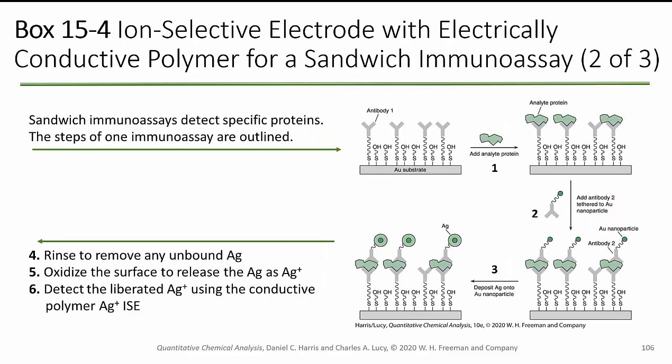There are other neat things you can do, like putting biomolecules into the polymer on your electrode. You can have a gold substrate with a self-assembled monolayer carrying some antibodies. As the analyte protein binds to those antibodies, you can attach a nanoparticle to it, oxidize the surface to release Ag as Ag⁺, and then detect the Ag⁺. There are lots of different tricks you can do with electrodes to detect things you might not think would be readily available for an electrochemical measurement.